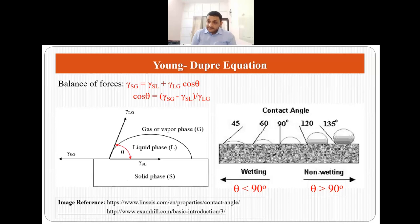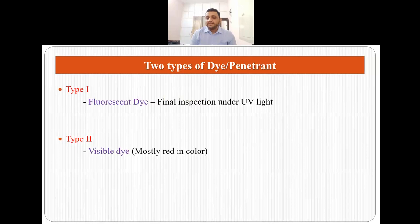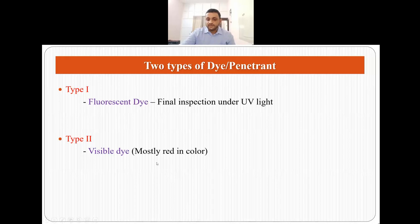The contact angle should be less than 90 degrees if we want the liquid to spread over the surface and go inside the cracks or discontinuities. For this we use two types of dyes. Type 1 dye is a fluorescent dye, used to inspect a component under UV light. Type 2 dye is a visible dye — usually red in color — used to detect flaws in normal white light or daylight. Red is used because it contrasts with almost all materials.